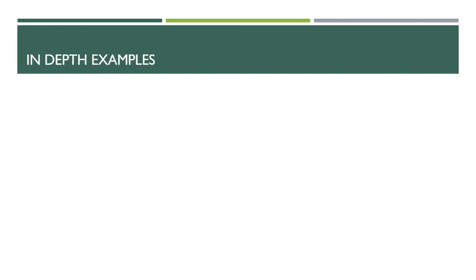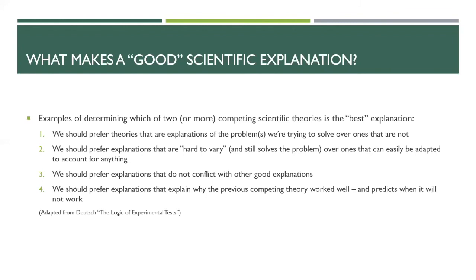Where we left off last time, we're going to go into in-depth examples. This was the slide we looked at last time — what makes a good scientific explanation. We should prefer theories that are explanations of the problems we're trying to solve over ones that are not. Each of these seems self-intuitively obvious, and that's intentional. But it's surprising how often people go to theories that don't actually solve the problem they're trying to solve.